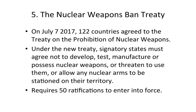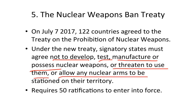The treaty specifies that signatories must agree not to develop, test, manufacture, or possess nuclear weapons, or threaten to use them, or allow any nuclear arms to be stationed on their territory. The treaty requires 50 ratifications to enter into force, and it's fully expected that those 50 ratifications will be forthcoming.